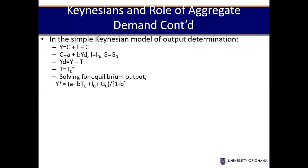Investment is autonomous, which means it is independent of interest rates, and government expenditure is also taken as autonomous. Here we are also assuming that taxes are autonomous. These assumptions will change in more complex models — there are questions where government expenditure depends on income, investment depends on income and interest rates, and there can be income-induced tax. But this is the basic model.